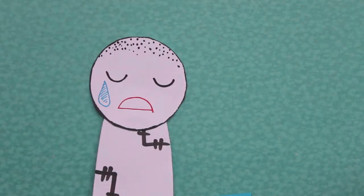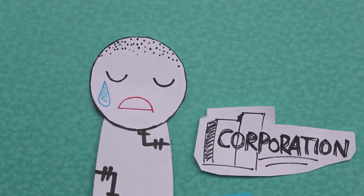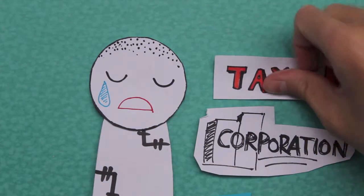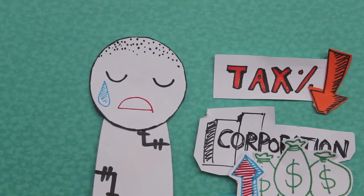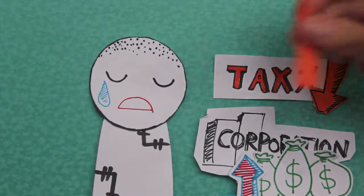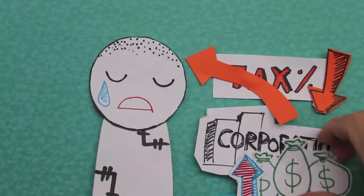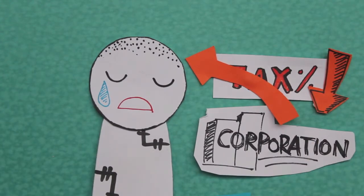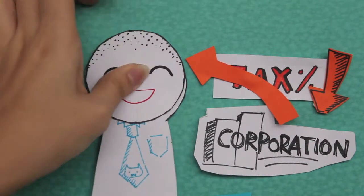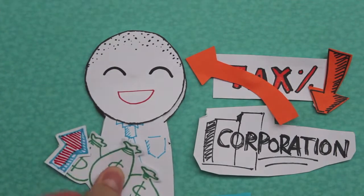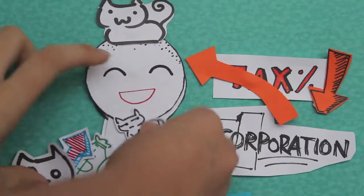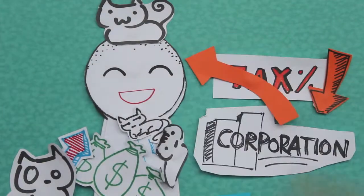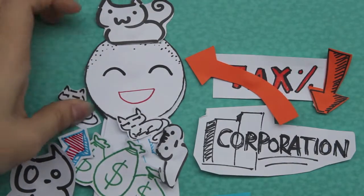Remember Bob? Because the government has implemented fiscal policies, corporate tax has decreased. Now, corporations have increased profits and are able to hire more people. And thus, Bob is now employed. Bob has more purchasing power and can buy more cats! This is one way fiscal policy can reduce cyclical unemployment.